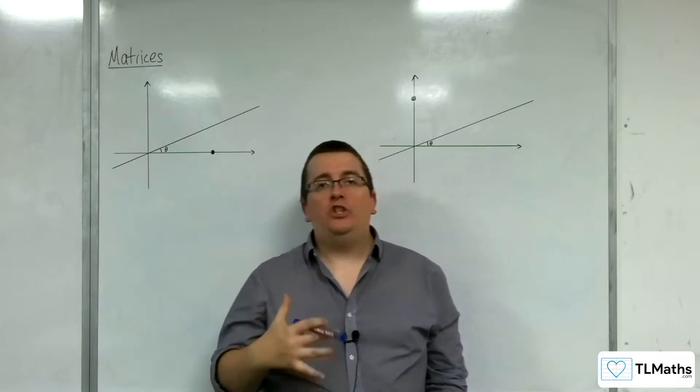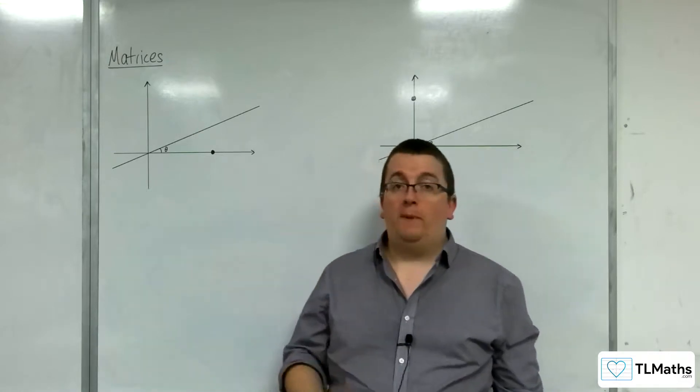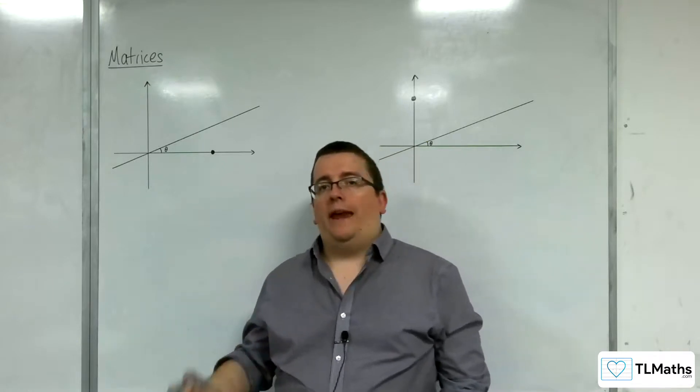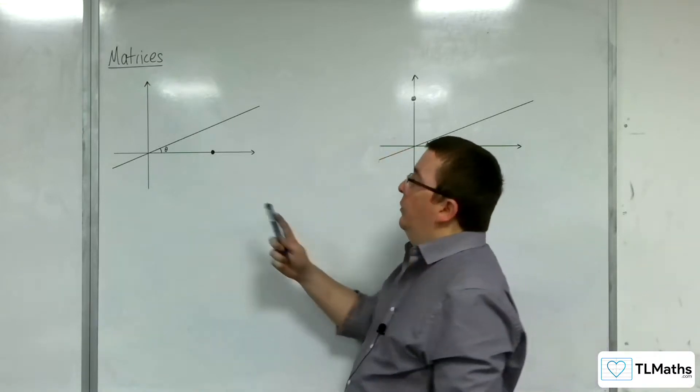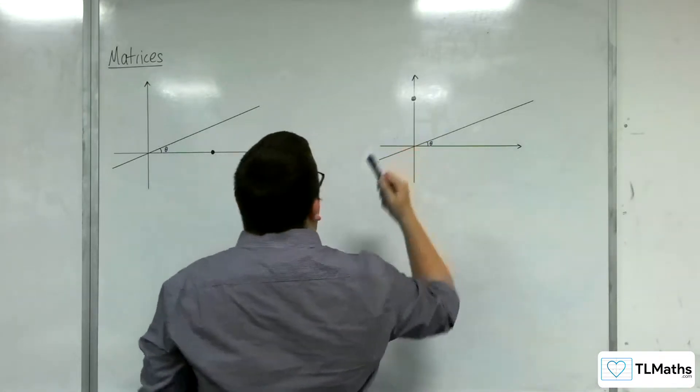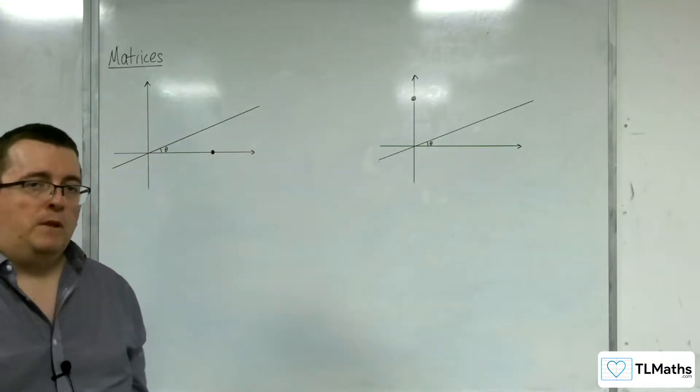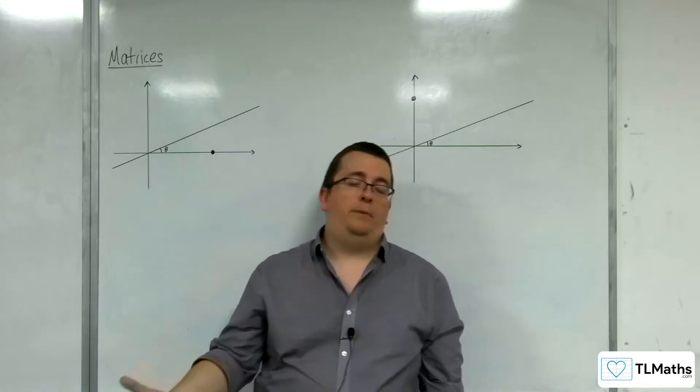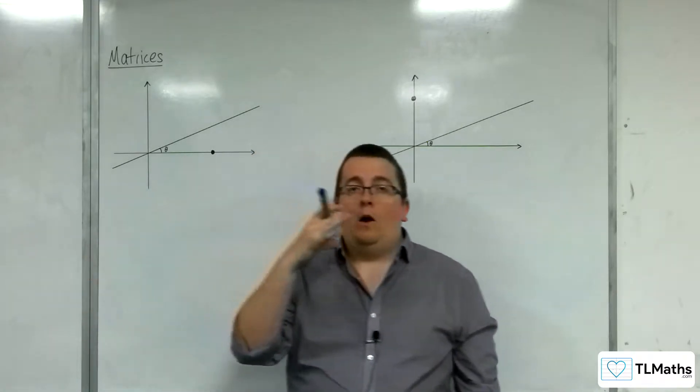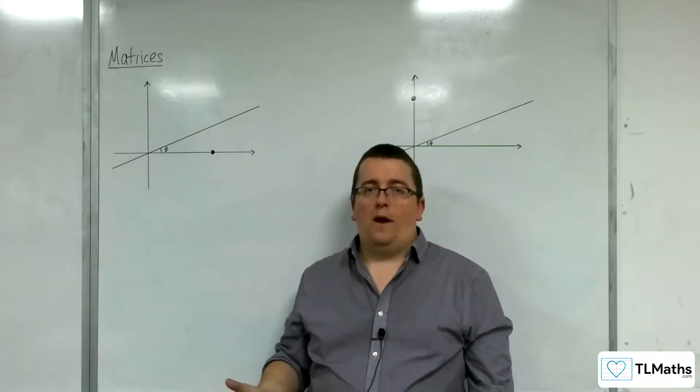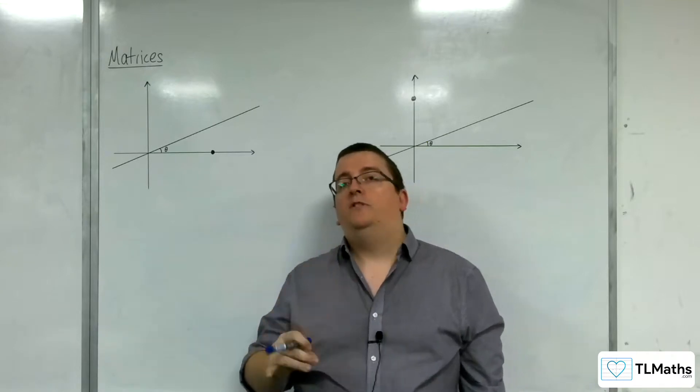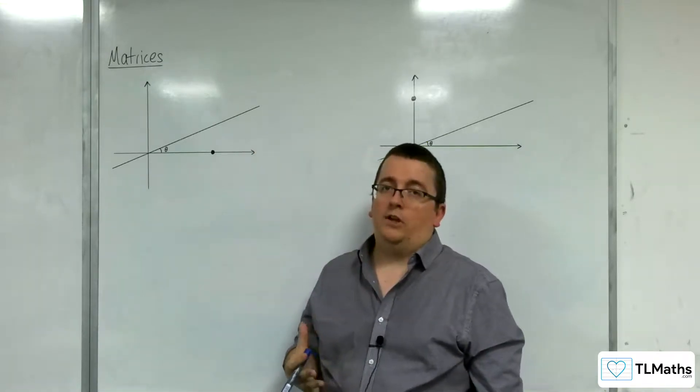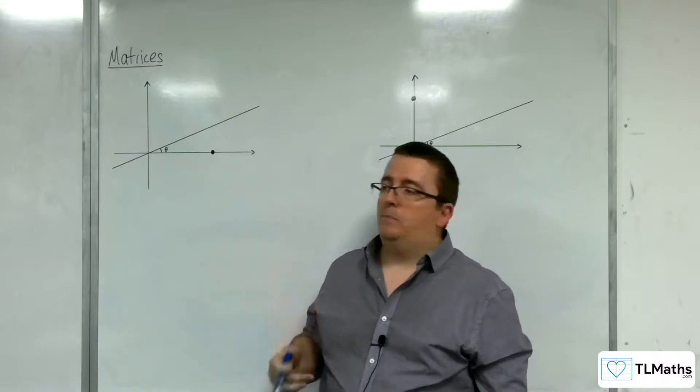In this video, I'm going to introduce you to the general transformation matrix that will reflect a point in a line that makes an angle theta with the x-axis. The way that we've done these transformations is to consider what happens to the points (1,0) and (0,1). This construction is actually quite onerous, so you're going to have to bear with me.